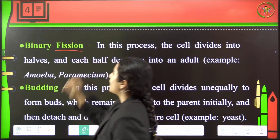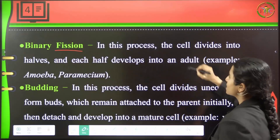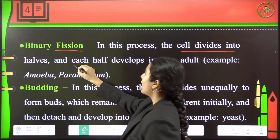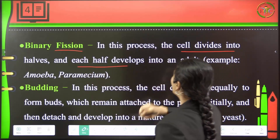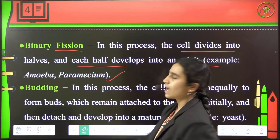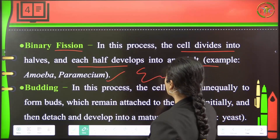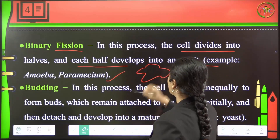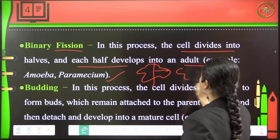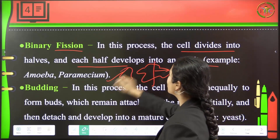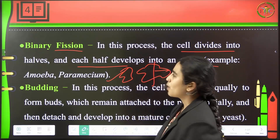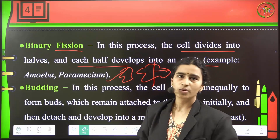Coming to binary fission — in this process the cell will divide into halves and each half will develop into an individual. Example here is the amoeba. If you consider amoeba, it is going to split into parts, and each part will grow into another individual — a new offspring. This is how binary fission occurs.